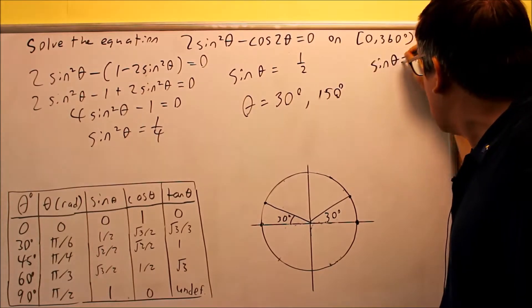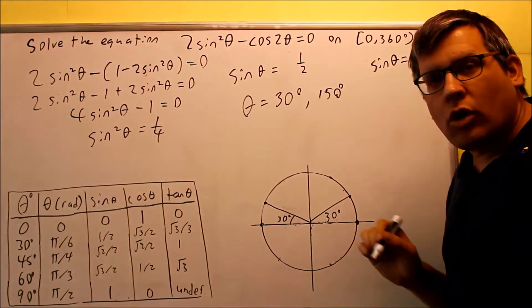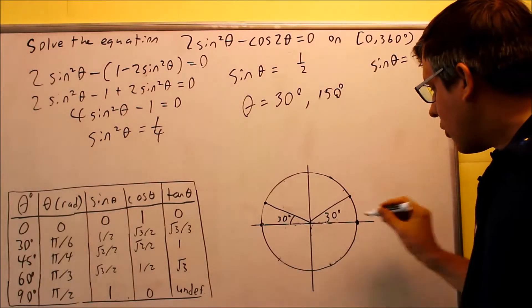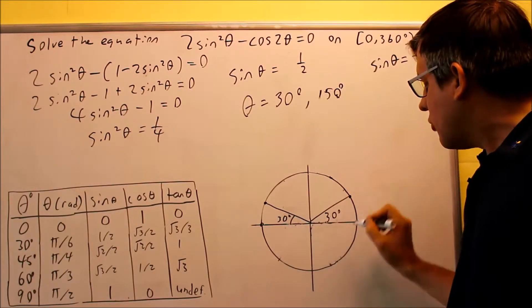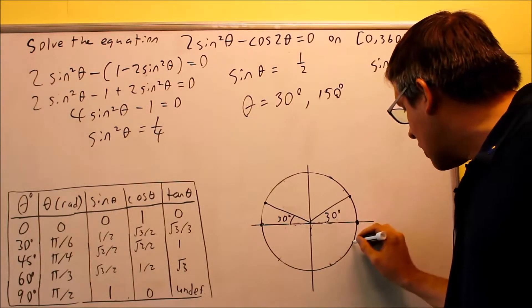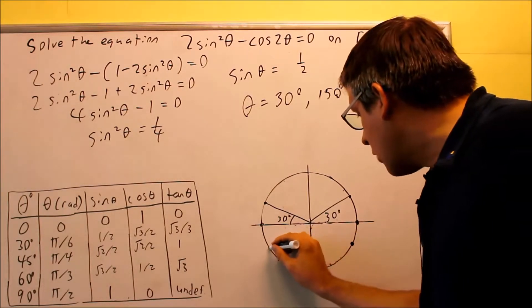We also want to consider sine of theta equals negative one-half. We want to get the two answers associated with that one. 30 degrees, that's where sine is positive. But I also want to look at where it's going to be negative. Negative one-half is going to be right below here and right below right there.